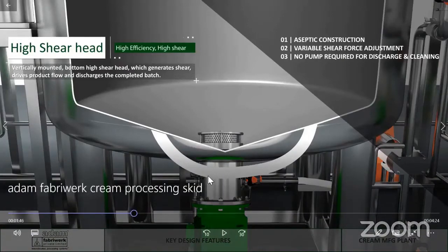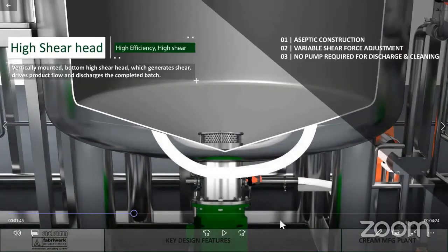The high shear head within the vessel is with a fan and screen arrangement system. It is vertically or side mounted which generates shear and drives the product flow, also discharges the batch specifically when it is in the bottom configuration. This is fitted with a variable speed drive which ensures variable shear force on the products. It ensures complete de-agglomeration of the product, and the anchor with scrapers gives a complete mix within the manufacturing vessel.